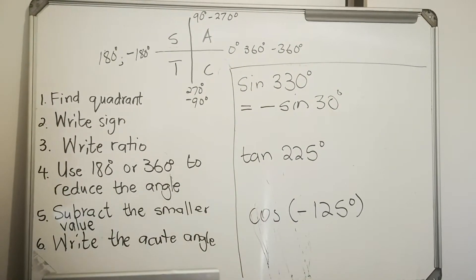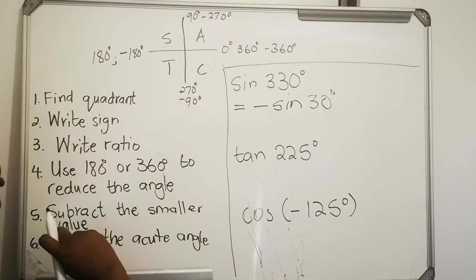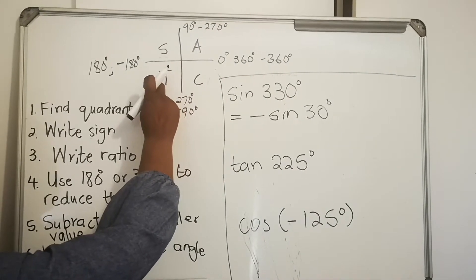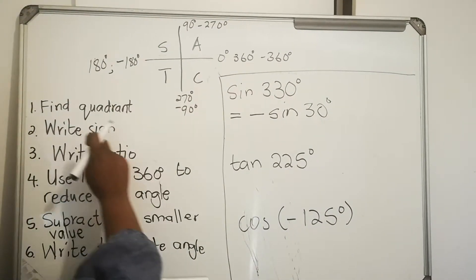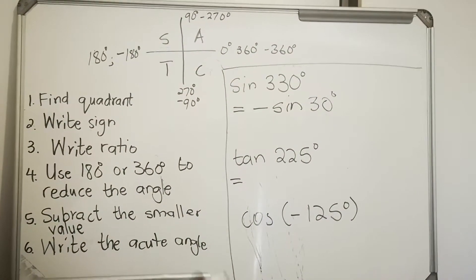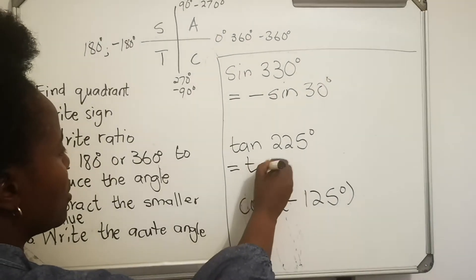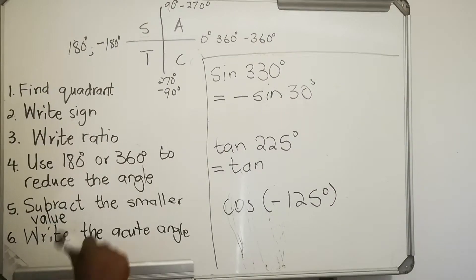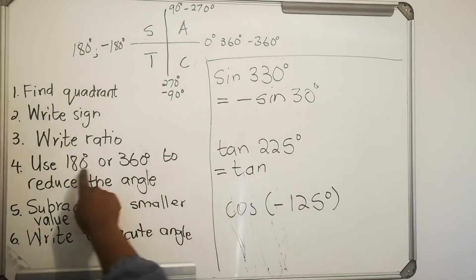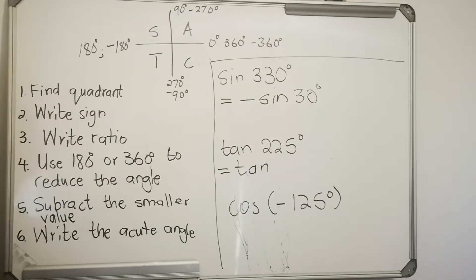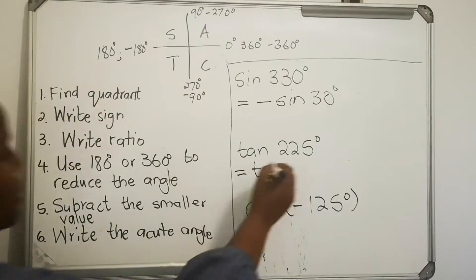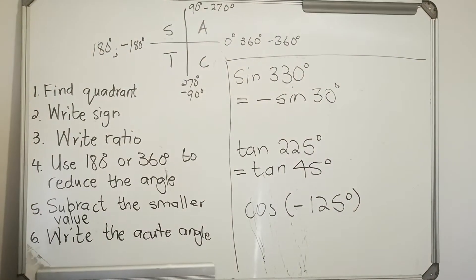Next example: tan 225. Where is 225? It's between 180 and 270, so it's in the third quadrant. How is tan in the third quadrant? It is positive, so you don't write a sign. Write the ratio tan. Which is bigger — 225 or 180? 225 is bigger, so 225 minus 180 equals 45 degrees. Your acute angle is 45 degrees.